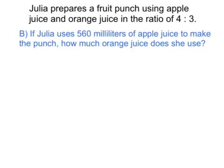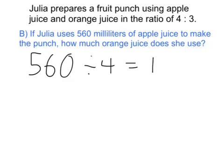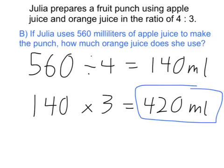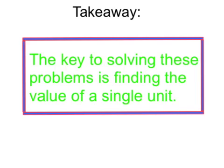Just to show the pure mathematics: we start with 560, divide by the 4 parts of apple juice in this recipe to get 140 milliliters per unit. We know each unit is 140 milliliters, and we have three units of orange juice, so 420 milliliters is our answer. The takeaway is that the key to solving these kinds of problems is finding the value of a single unit in our ratio. Once we have that, it's very powerful and we can use it to solve all kinds of different problems. Thanks a lot, little mathematicians!